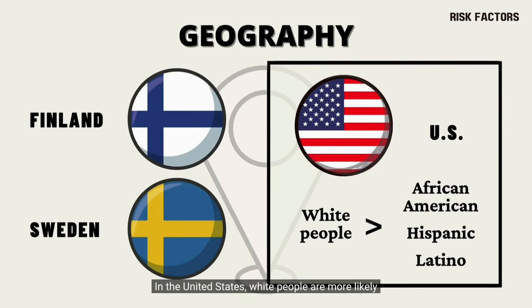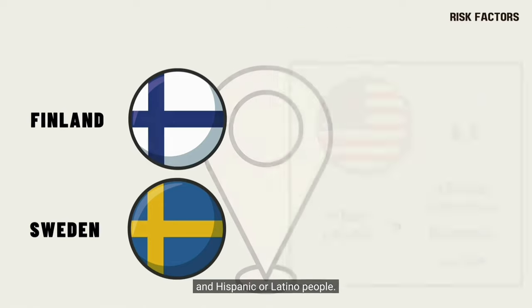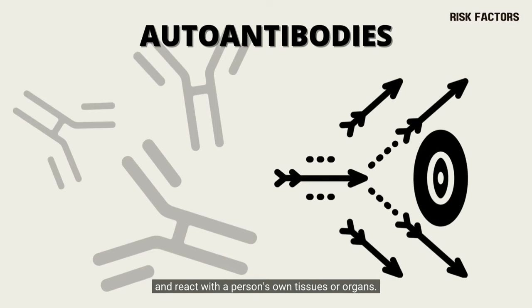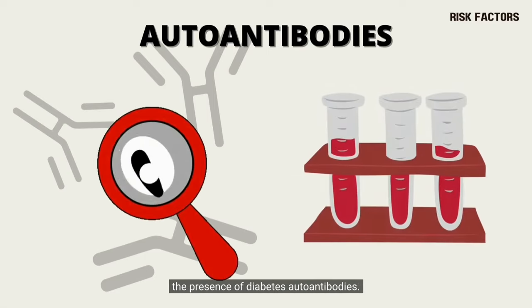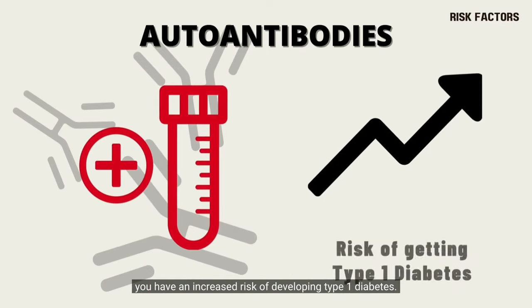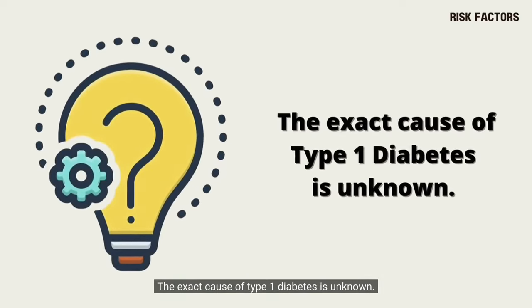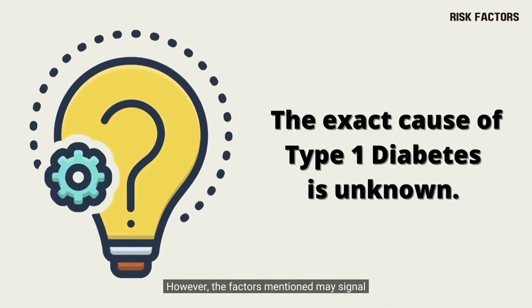In the United States, white people are more likely to develop type 1 diabetes than African American and Hispanic or Latino people. The presence of autoantibodies is also a risk factor. Autoantibodies are antibodies that mistakenly target and react with a person's own tissues or organs. Sometimes, family members of people with type 1 diabetes are tested for the presence of diabetes autoantibodies. If you have these autoantibodies, you have an increased risk of developing type 1 diabetes. But not everyone who has these autoantibodies develops it. The exact cause of type 1 diabetes is unknown; however, these factors may signal an increased risk.